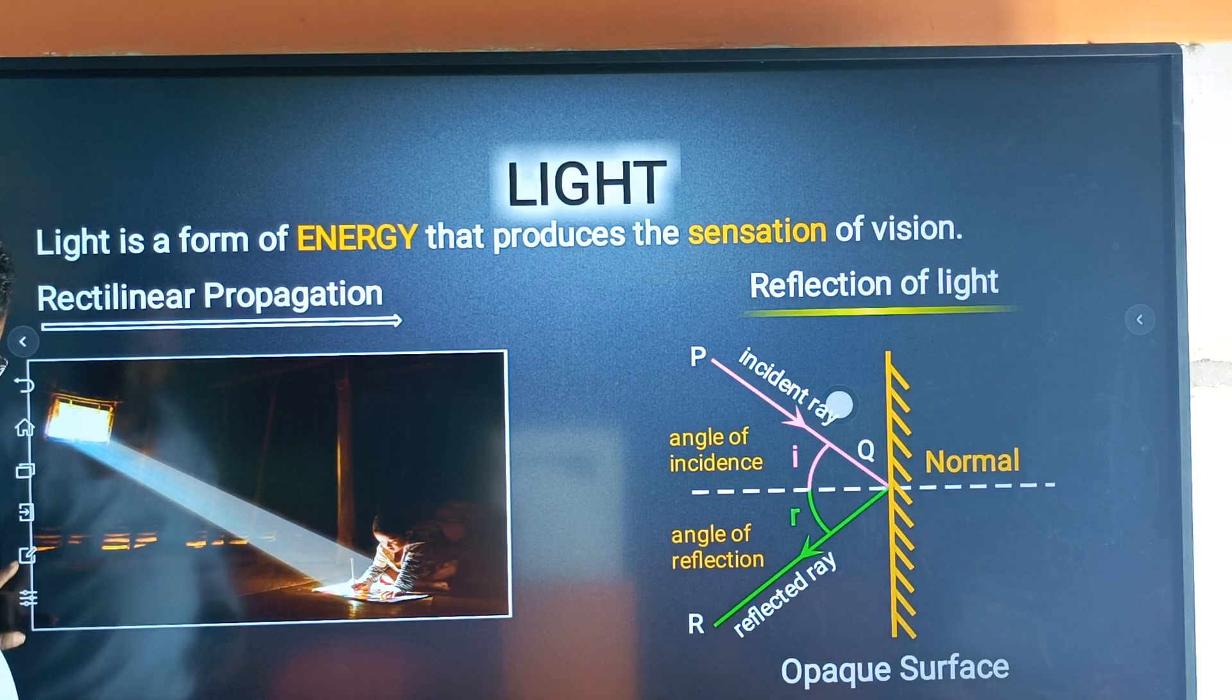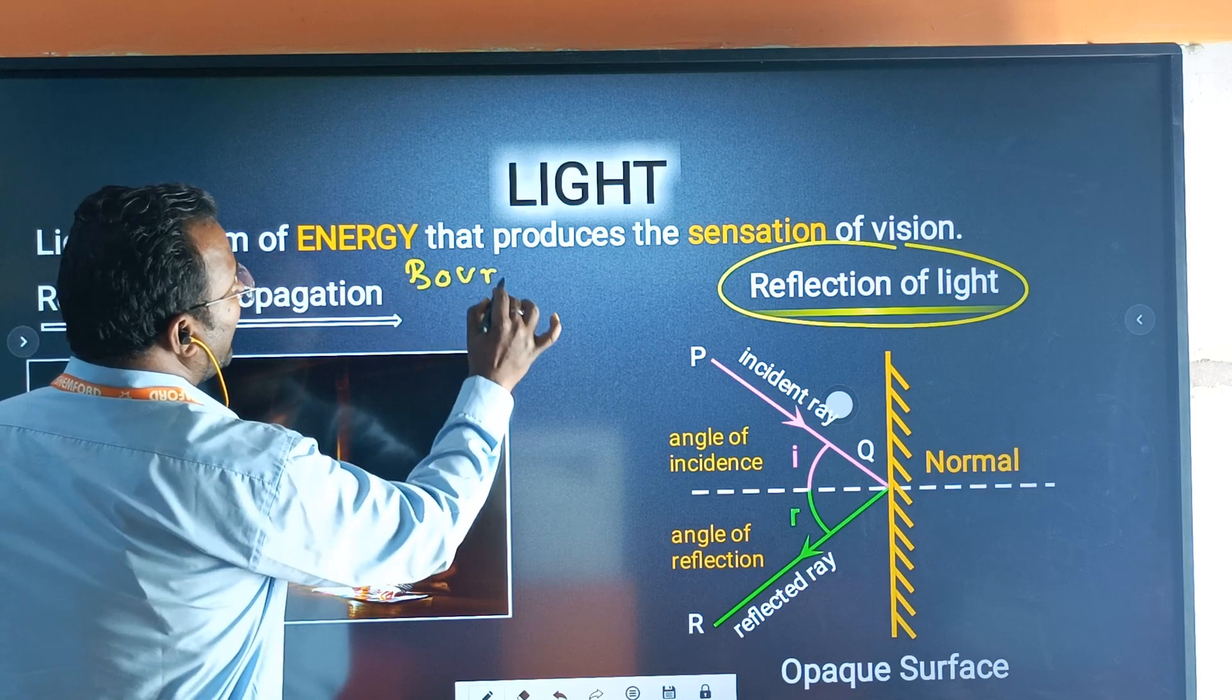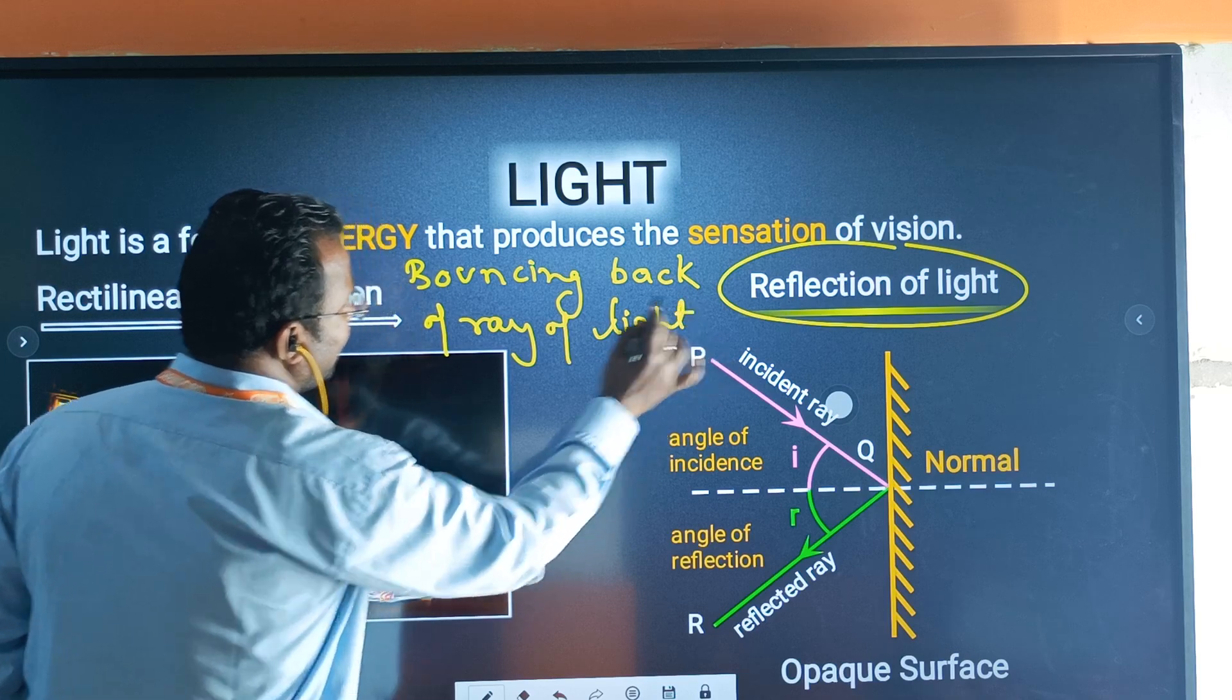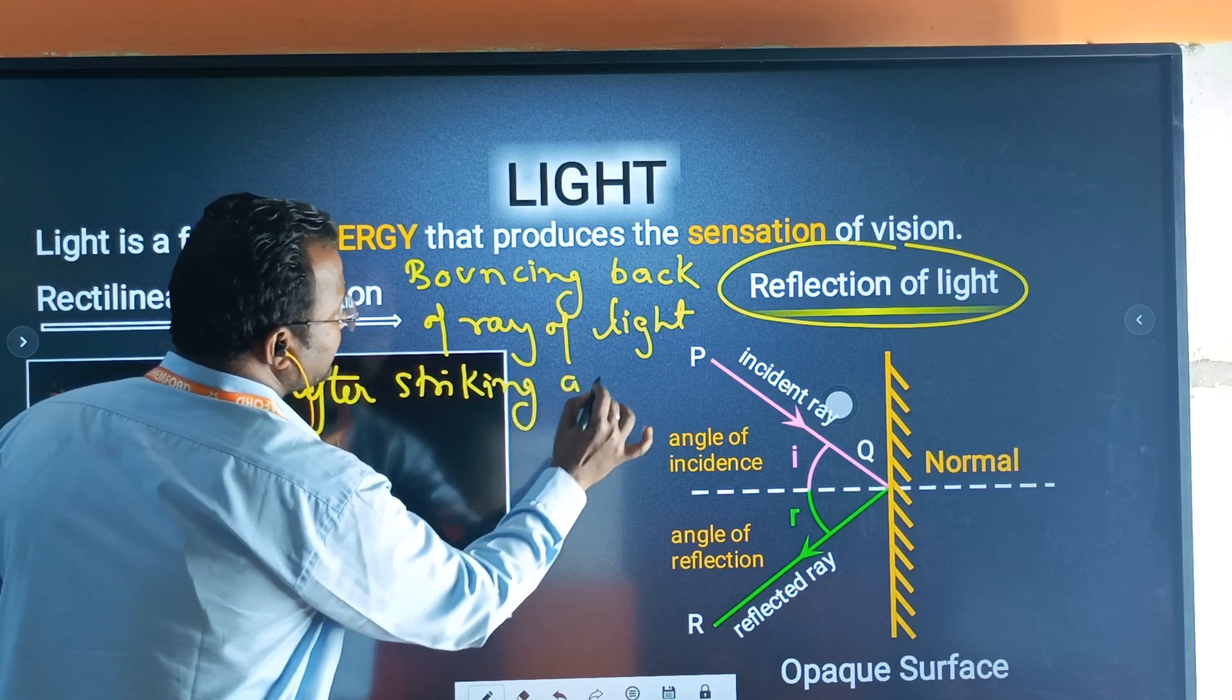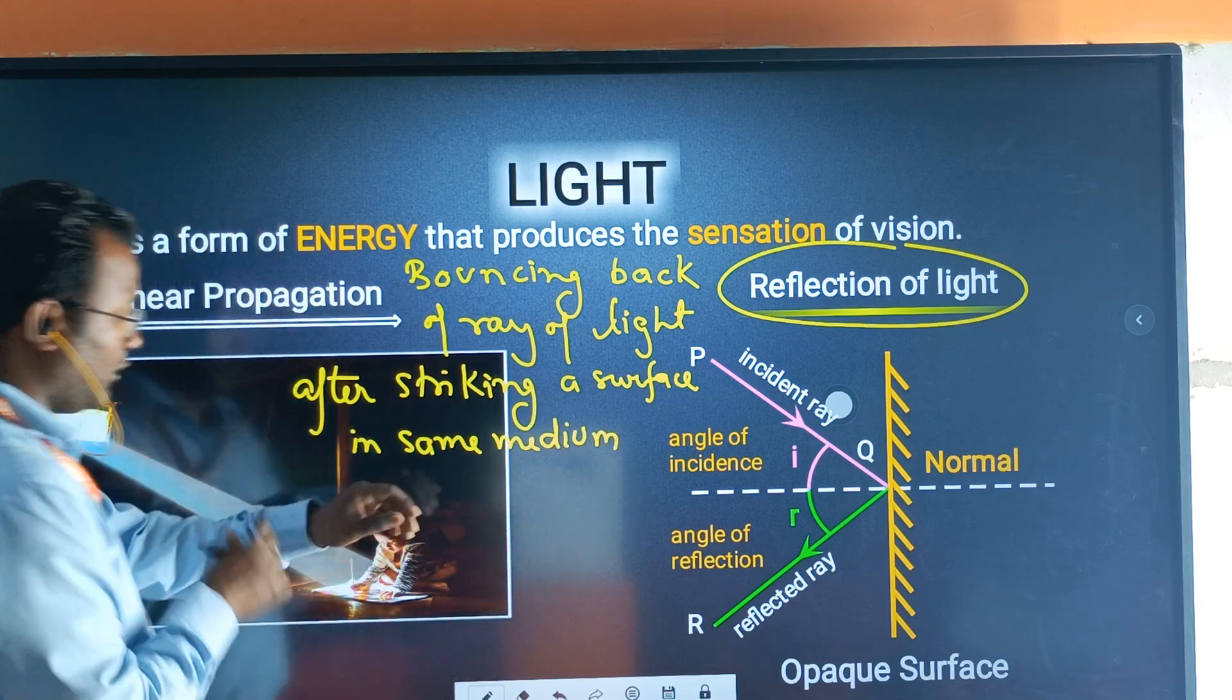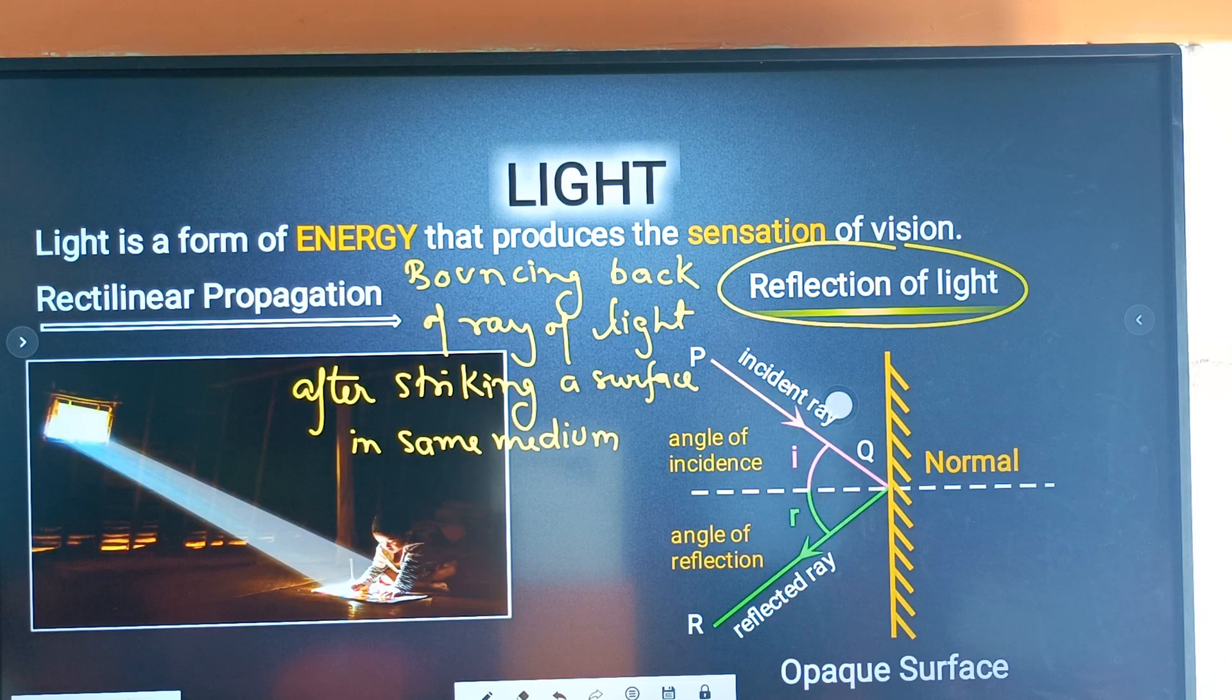If we talk about the definition of reflection of light, simple thing is bouncing back of ray of light after striking a surface in same medium. That is called basically reflection of light.